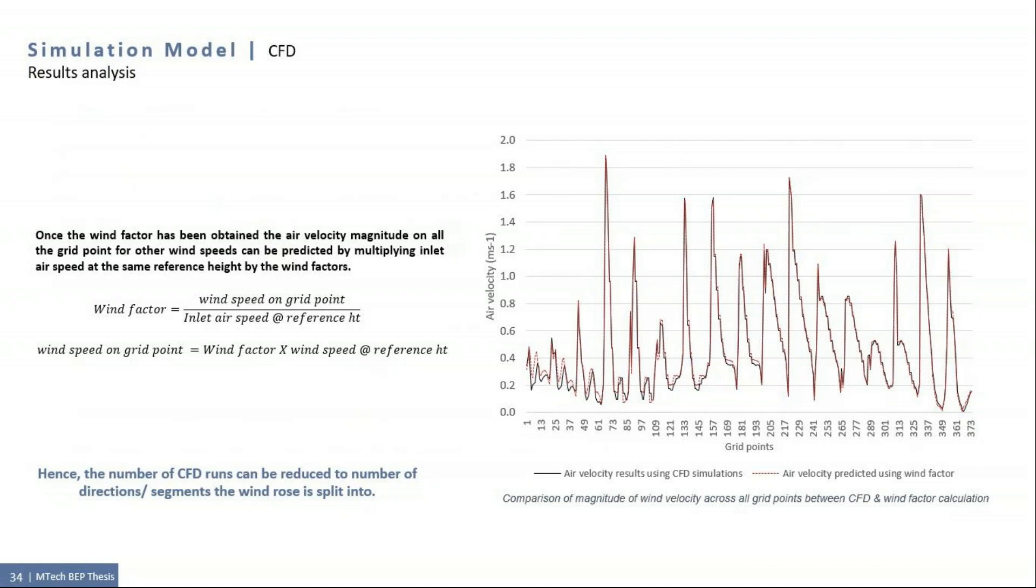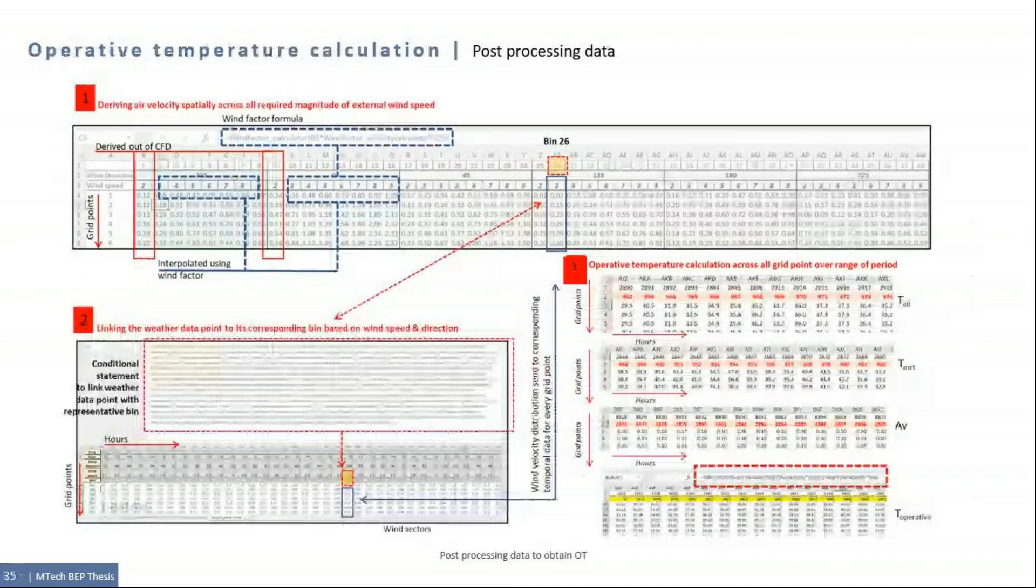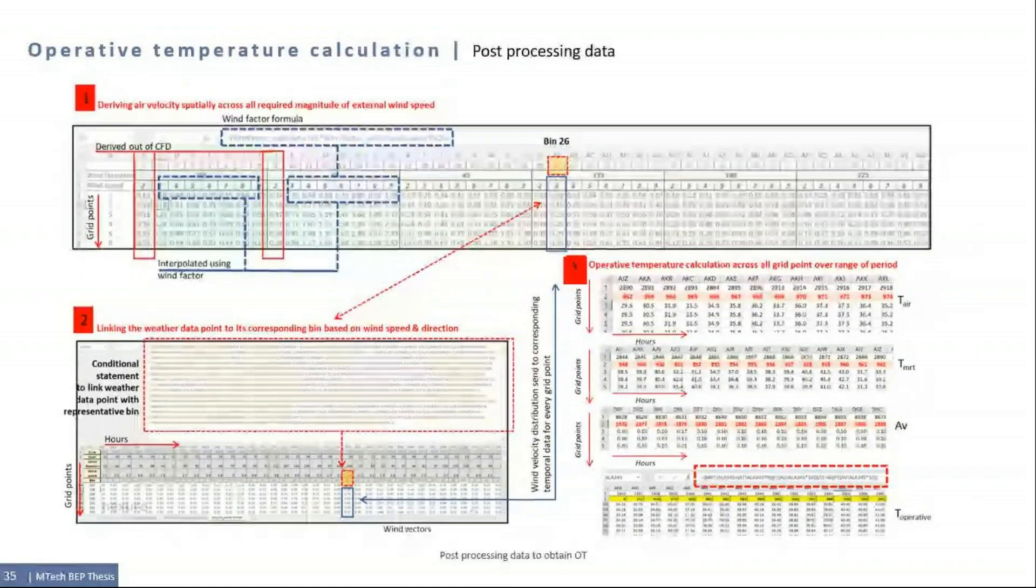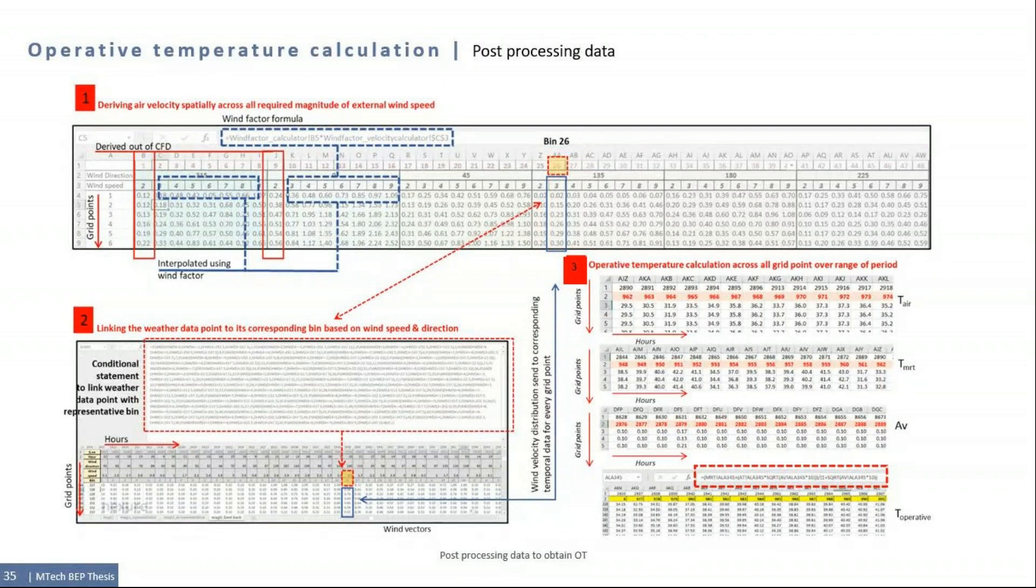Air temperature, mean radiant temperature and air velocity data across all the 390 grid points for 2920 occupancy hours was extracted. Conditional statements were scripted in Microsoft Excel to link air velocity distribution of all the 2920 hours with their respective bins and data for all the three parameters was streamlined in similar format and operative temperature was calculated across all the grid points.